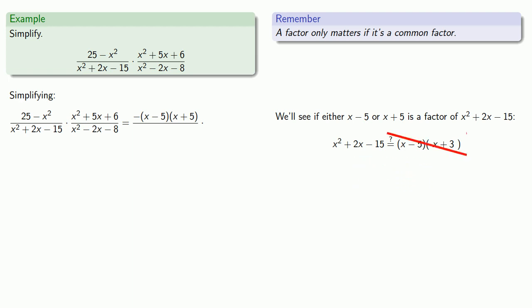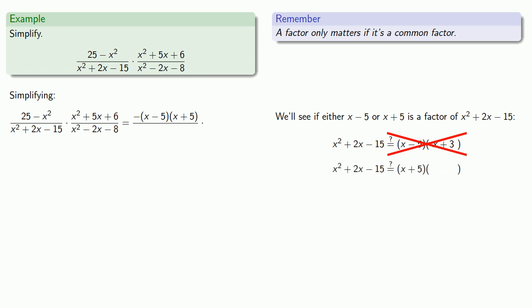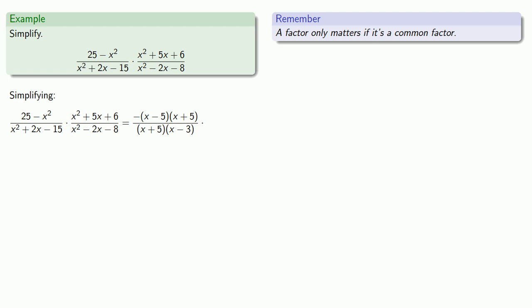Maybe x squared plus 2x minus 15 equals x plus 5 times something. We check it out and it is — giving us the factorization of x squared plus 2x minus 15. This introduces a new factor in the denominator: x minus 3.